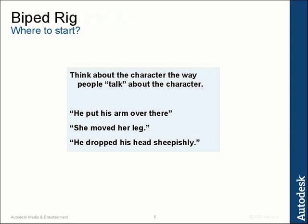'He put his arm over there' — that actually breaks down to: he lifted his clavicle, lifted his upper arm, twisted the arm, raised the forearm, broke the wrist, lifted the wrist up, maybe spread the fingers a tiny bit, then started dropping his upper arm and let the forearm fall behind. If you broke it down into individual bones, that would be complicated. People don't speak that way — they say 'he put his arm over there.' Similarly, 'she moved her leg' means she lifted her hip, raised her thigh, and brought her lower leg. But again, we don't talk like that.